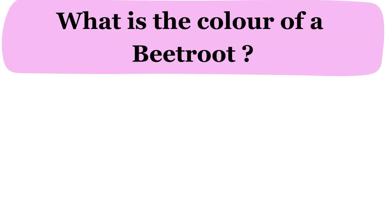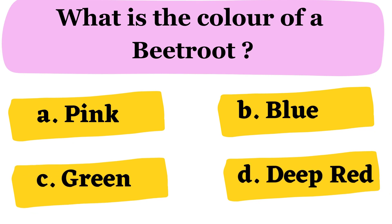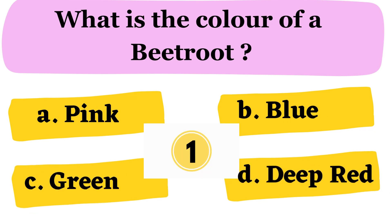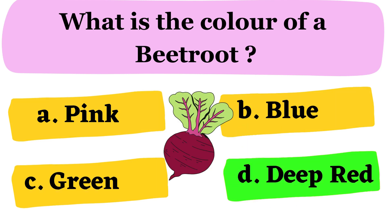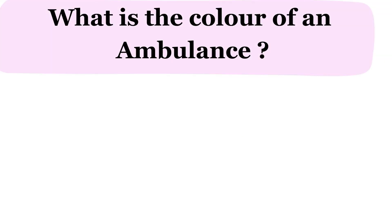Next question. What is the color of a beetroot? A. Pink B. Blue C. Green D. Deep Red. The correct answer is option D. Deep Red.